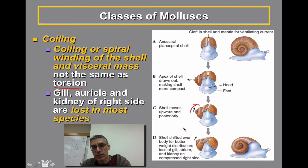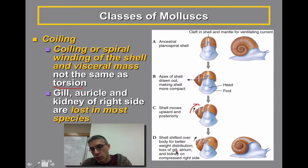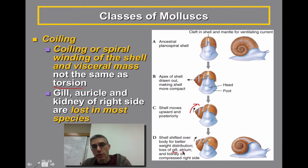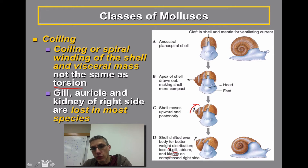As the shell is shifted over, it allows for better weight distribution in the animal. But as the coiling continues, we get loss of some internal organs — we get loss of a gill in some species, loss of an atrium, which is one of the heart structures we looked at previously in bivalves, and typically loss of a kidney as well. Even though there's a partial loss of these essential organ systems, the advantage of the weight distribution far outweighs the loss of these important organs.